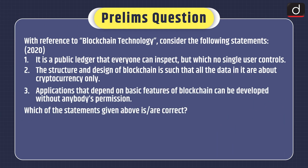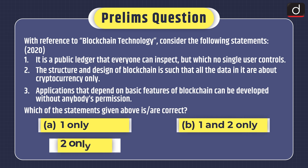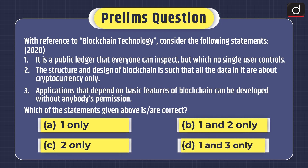Moving on to practice questions — note down the prelims-based question. With reference to blockchain technology, consider the following statements: 1. It is a public ledger that everyone can inspect but which no single user controls. 2. The structure and design of blockchain is such that all the data in it are about cryptocurrency only. 3. Applications that depend on basic features of blockchain can be developed without anybody's permission.